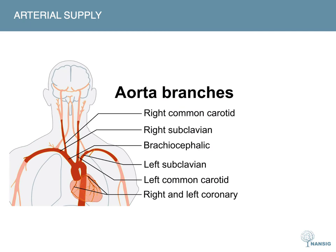Looking at the arterial supply, starting with the heart: blood comes out in the ascending aorta, then the descending aorta. The first branch is the brachiocephalic artery, which splits into the right subclavian and right common carotid. The left common carotid is the second branch directly from the aorta. The common carotid then splits into the internal and external carotid arteries. The external carotids mainly supply the neck and head, but not the intracranial structures.